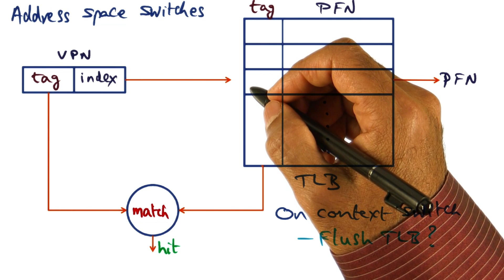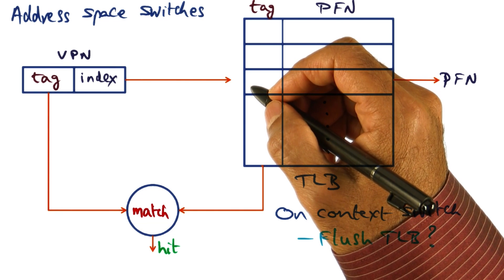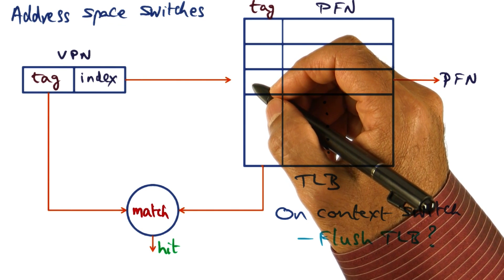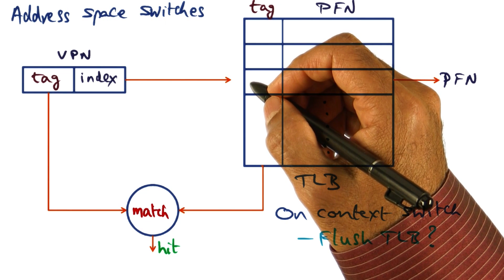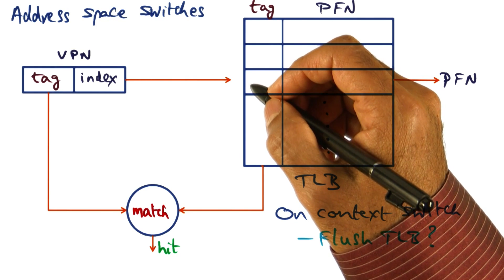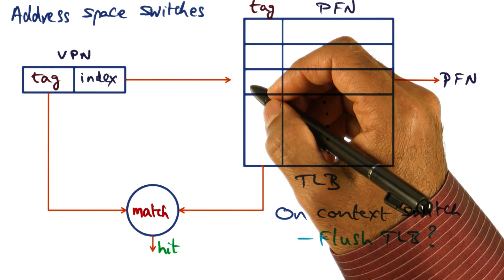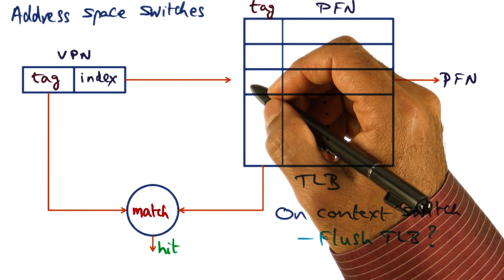And we are now talking about explicit cost for crossing protection domains implemented as distinct hardware address spaces. Not the implicit cost. We're only talking about the explicit cost of crossing protection domains.